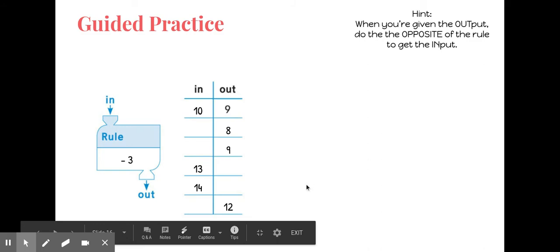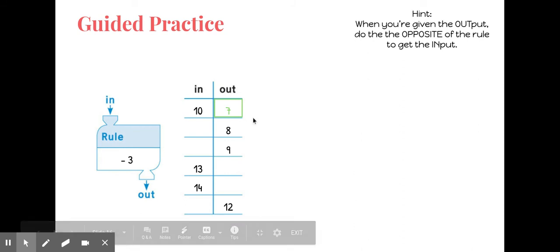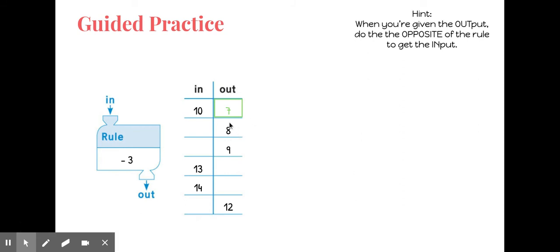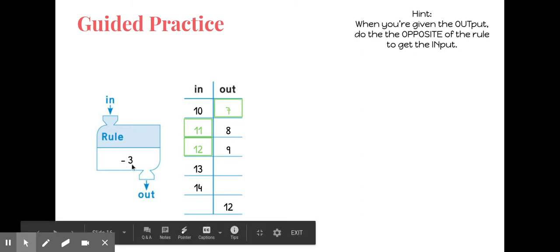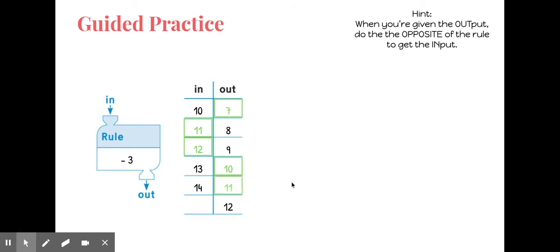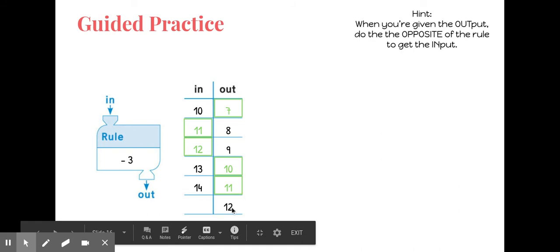Let's do another one. The rule is minus three. Ten minus three is seven. Now if I have an eight, that's the output, so I need to do the opposite: eight plus three is eleven. Nine plus three is twelve. For thirteen and fourteen, those are inputs so I follow the rule and take away three: thirteen minus three is ten, and fourteen minus three is eleven. Then at the output again: twelve plus three is fifteen.